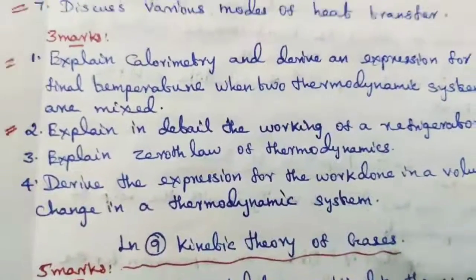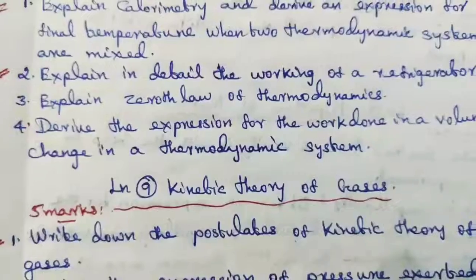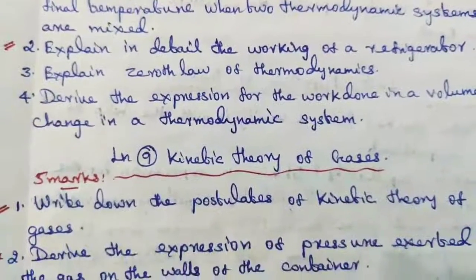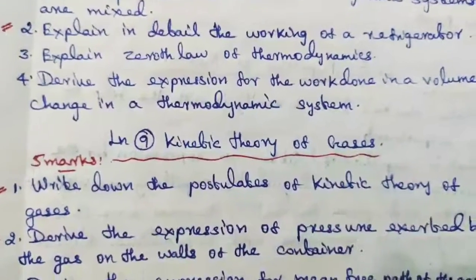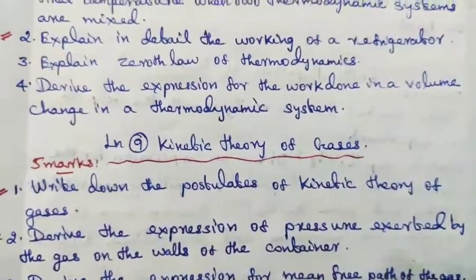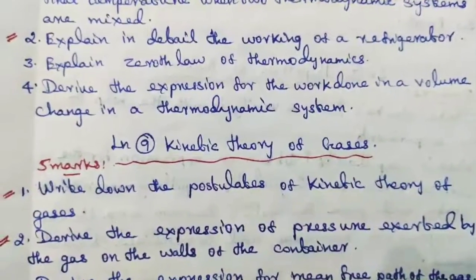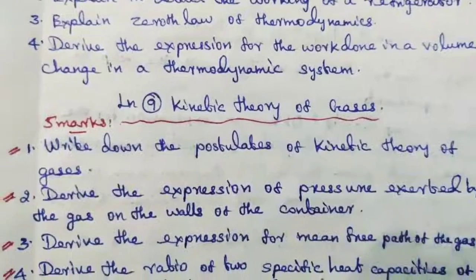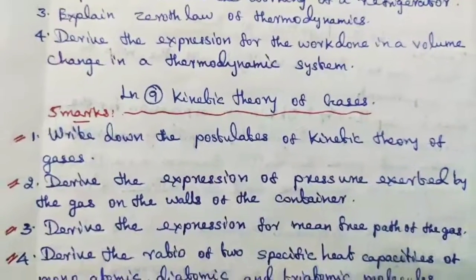Lesson 9, kinetic theory of gases, 5 marks. Write down the postulates of kinetic theory of gases. Derive the expression of pressure exerted by the gas on the walls of the container. Derive the expression for mean free path of the gas.